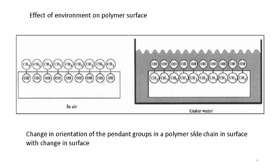Regarding the effect of environment on polymer surfaces, in air the non-polarized groups like CH₃ are more exposed towards the surface since air is not a conductive medium. However, when the surface is underwater — where the media is more ionic or polarized — hydroxyl groups become exposed instead. The orientation of pendant groups in a polymer side chain changes with the surrounding media.